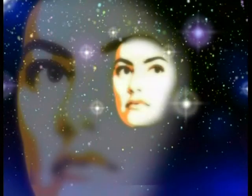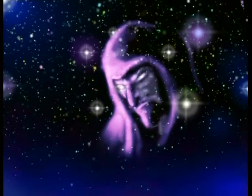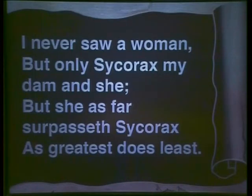Let's look at the final part of the extract. We know that Caliban is only half human. So what do you make of his appreciation of Prospero's daughter? 'And that most deeply to consider is the beauty of his daughter. He himself calls her a nonpareil. I never saw a woman but only Sycorax, my dam. And she, as far surpasseth Sycorax as greatest does least.'